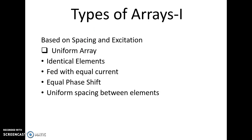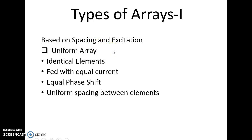Coming to the Types of Arrays, we can classify them based on spacing, excitation, and space parameters. Spacing and excitation can be considered as physical properties of the array antenna. These physical properties include the distance between the elements and the signal fed to each element. Depending on spacing and excitation, we can define the array as a uniform array.